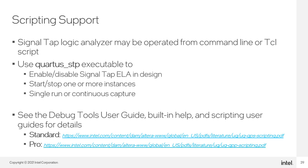The SignalTap Logic Analyzer can be fully controlled through the command line or scripted using TCL commands. The command line can be used to enable or disable a particular SignalTap file for a project, compile a design that includes the logic analyzer, start and stop an analysis, and control multiple SignalTap instances simultaneously. See the listed resources, including the scripting user guide, for details and examples.